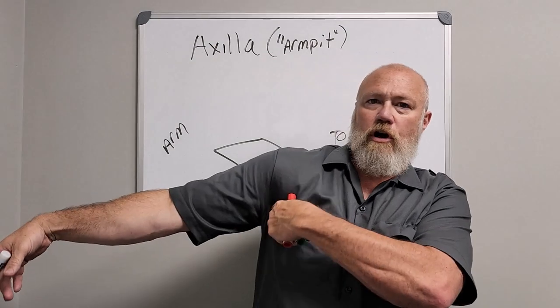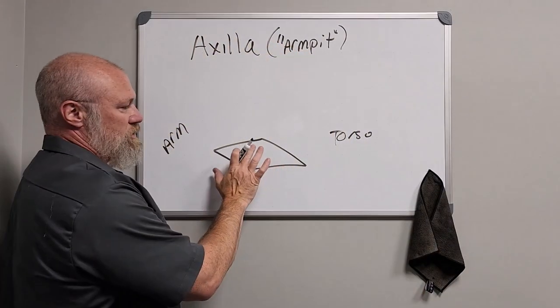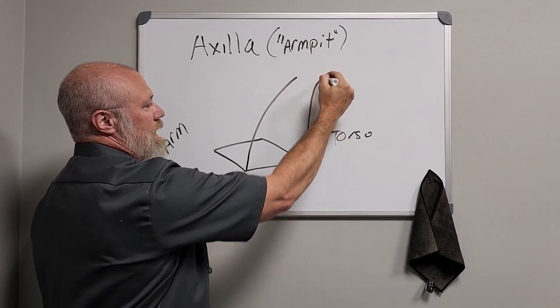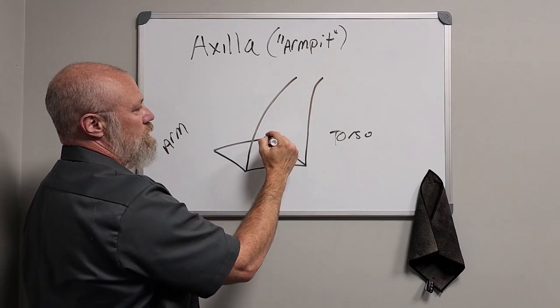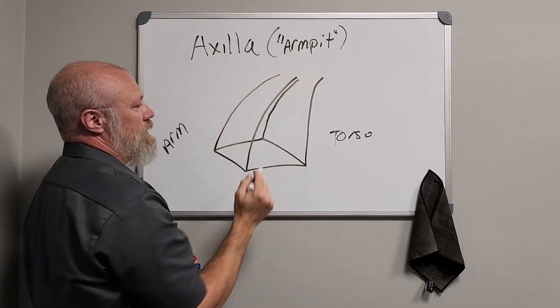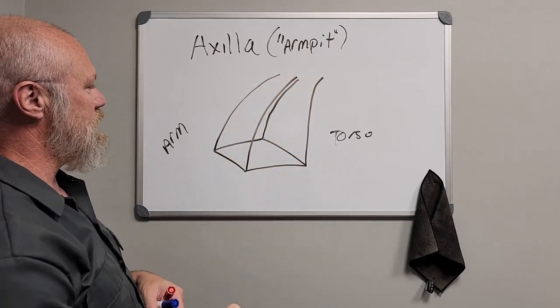You're looking at, for instance for me, we look at this armpit. So this is going to be the anterior surface, and then we'll draw that, kind of goes up in the background, and then all the way up here. This gives it kind of a four-sided shape.